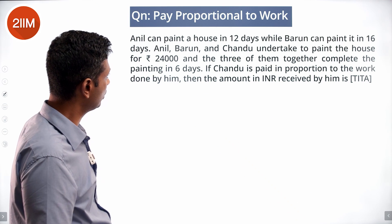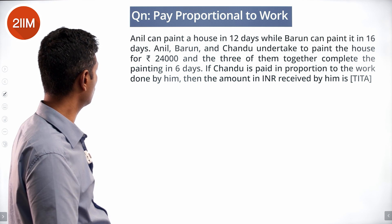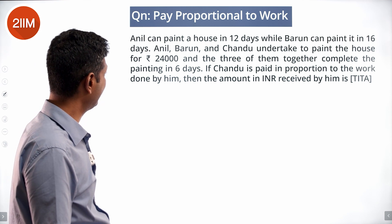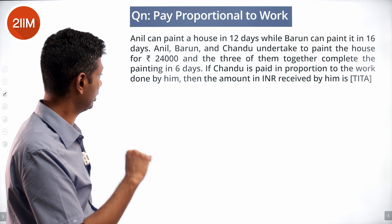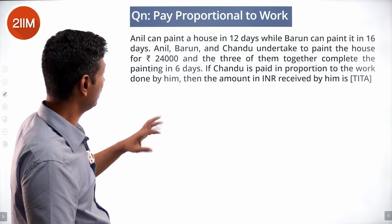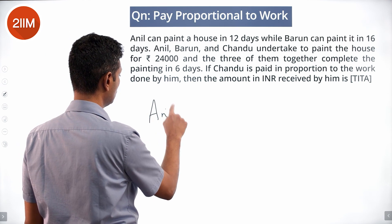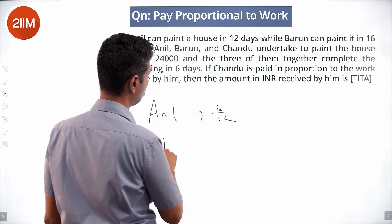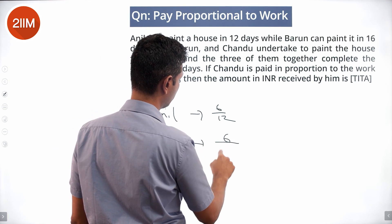Anil can paint a house in 12 days while Barun can do it in 16 days. Anil, Barun, and Chandru undertake to paint the house for 24,000. The three of them together complete the painting in 6 days. If Chandru is paid in proportion to the work done by him, find the amount in INR received by Chandru. Anil works 6 days: completes 6/12. Barun also works 6 days: completes 6/16.